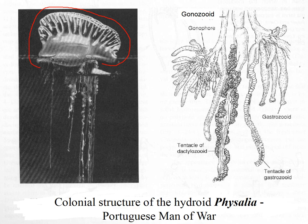We start with this particular individual. This is one individual animal within a colony. It is one of the exceptions to the rules — this individual doesn't have tentacles with stinging cells. It relies on other individuals within the colony to catch prey and share the food with it. This one is called a pneumatophore.